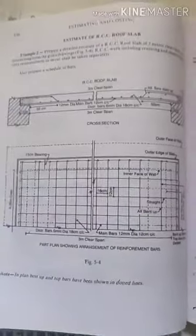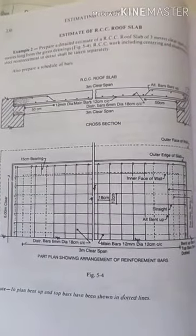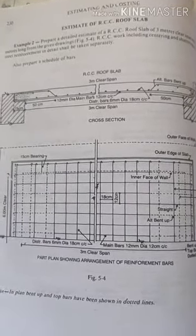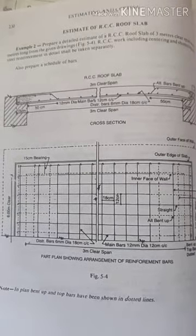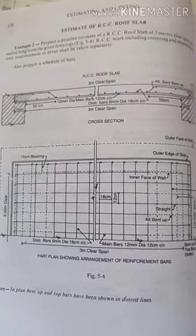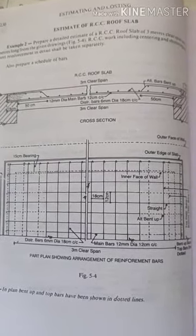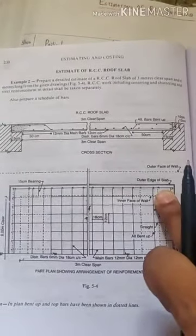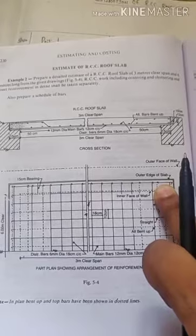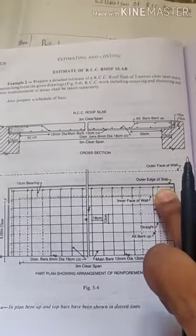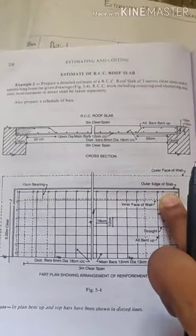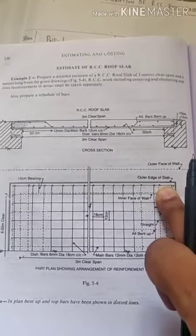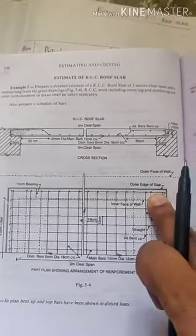Moving on to next, we will calculate the bar bending schedule for the given slab. It says: prepare a detailed estimate of RCC roof slab of 3 meter clear span and 6 meter long from a given drawing. RCC work including centering and shuttering and steel reinforcement in detail shall be taken separately. Also prepare a schedule of bars.